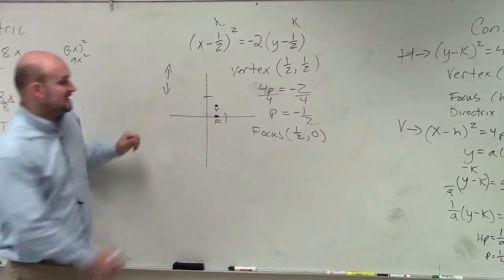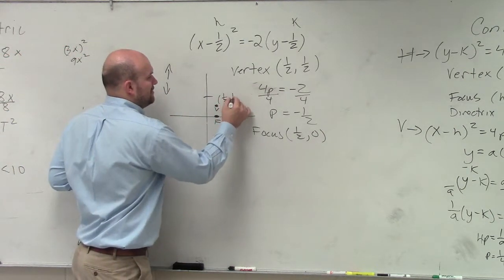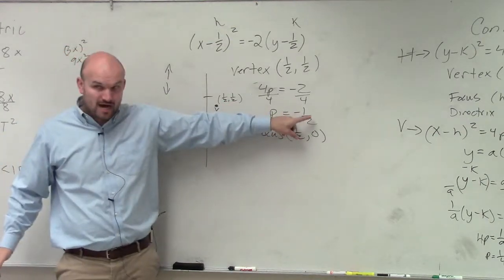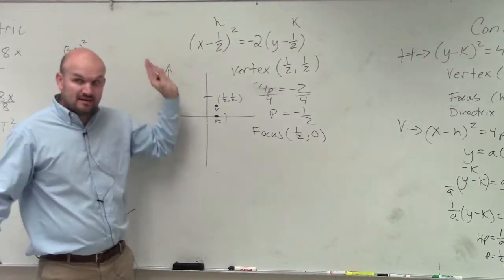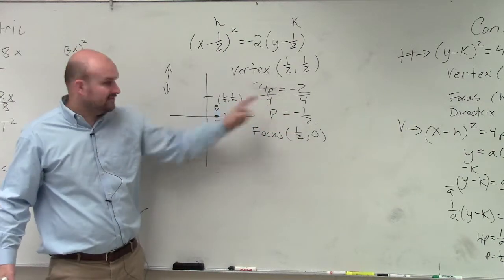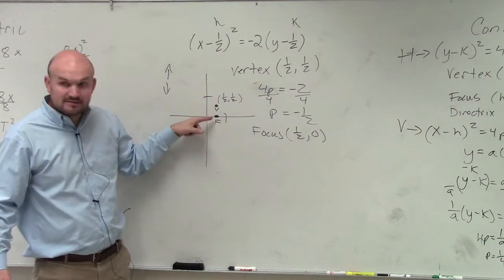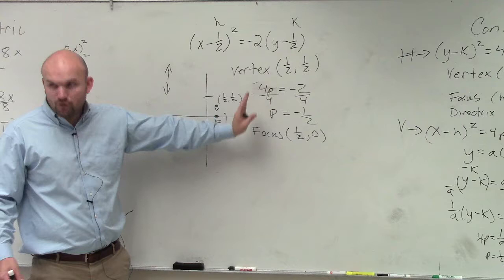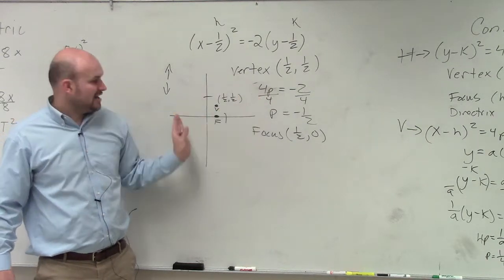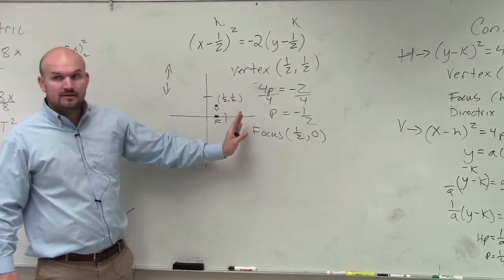So here's the vertex is at 1 half comma 1 half. If you go down 1 half, because the parabola opens up or down, so if you're going down 1 half and you're already up 1 half, then you're going to be at 0. But you're still over 1 half, so you're at 1 half comma 0.